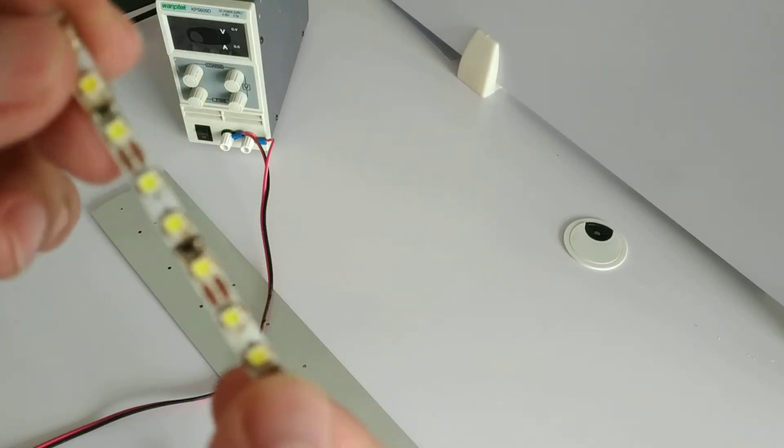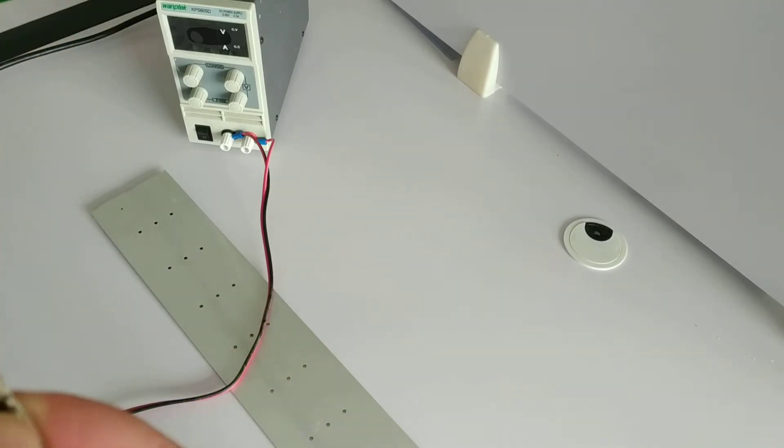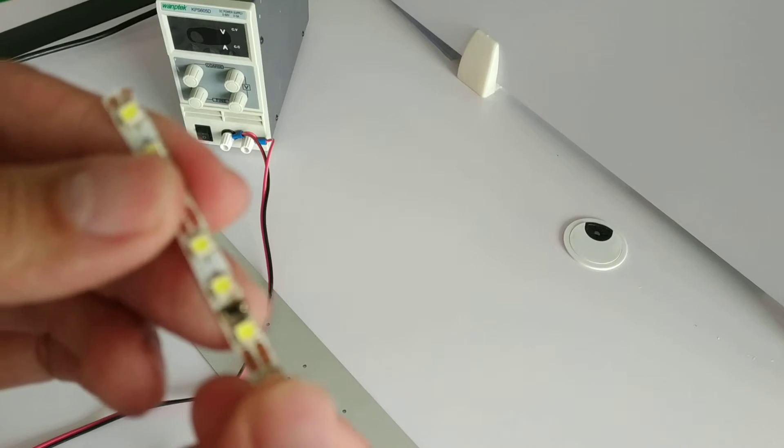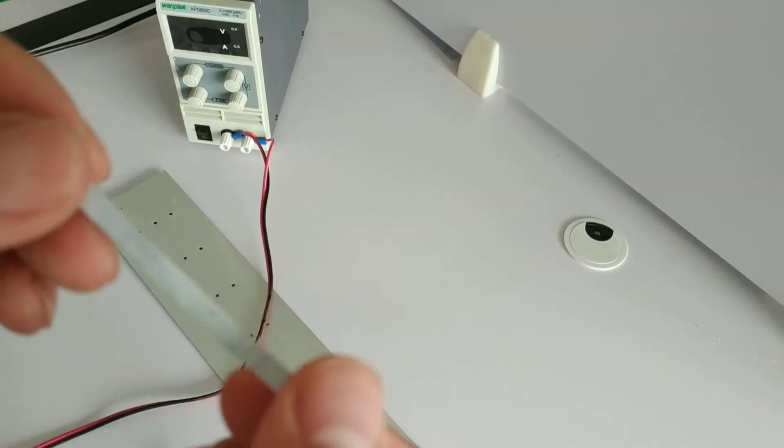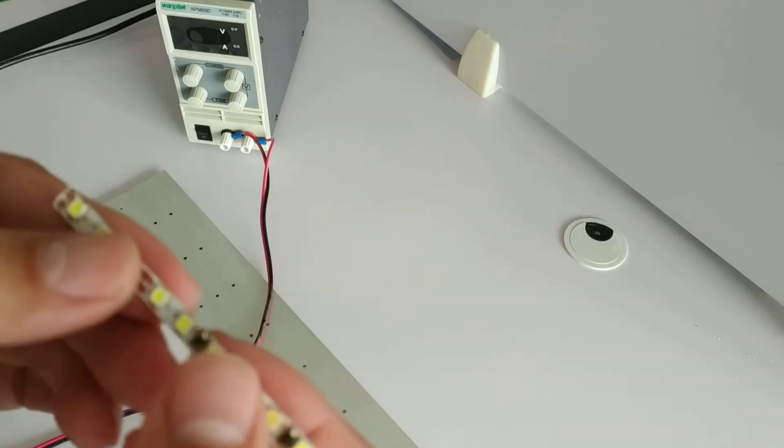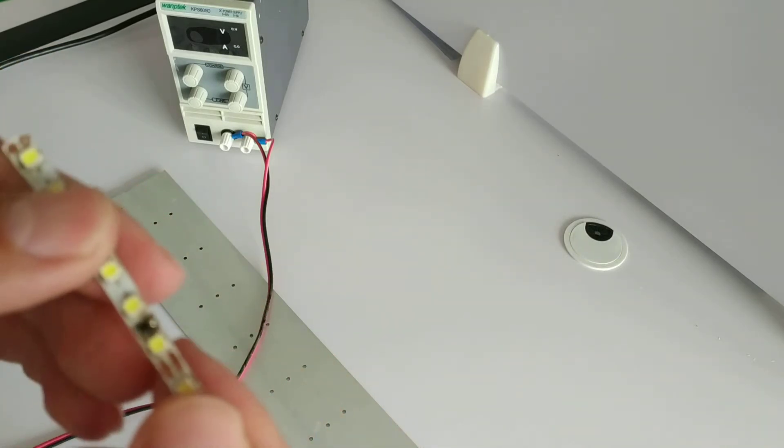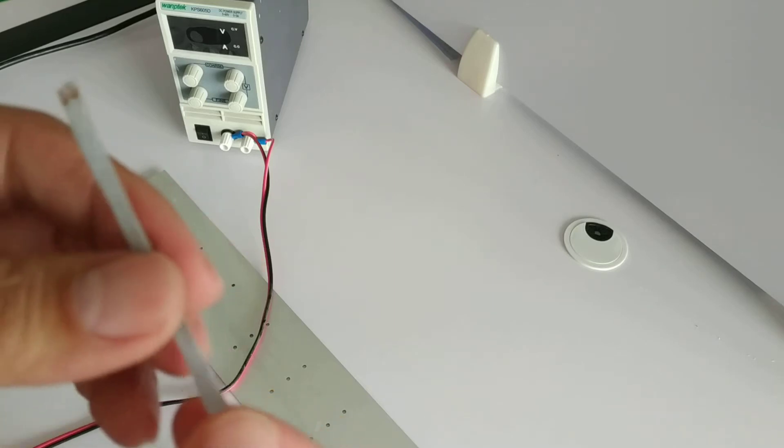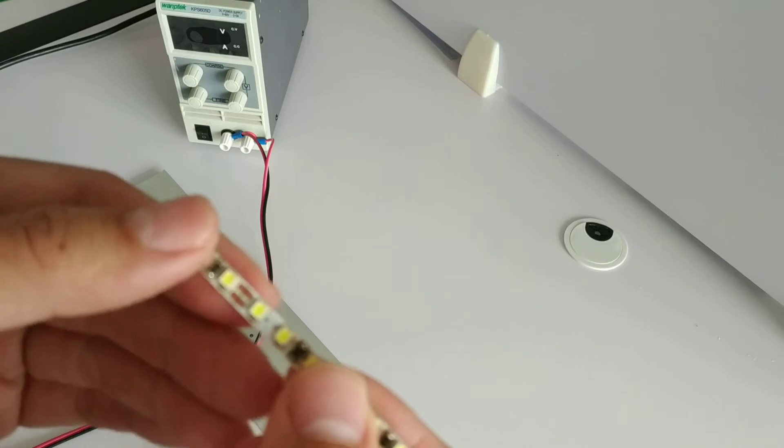So when you install the strip line, please make sure you are using the right LED power supply. DC 12 LED strip line needs DC 12 power supply, and DC 24 LED strip line needs DC 24 power supply.